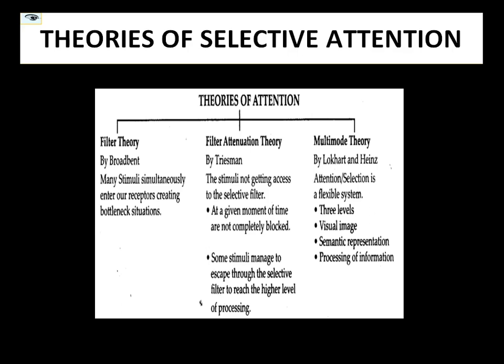The next very interesting model is the multi-mode theory, developed by Johnston and Heinz in the year 1978. This is a very interesting theory which says that attention is a very flexible system, and that it does allow the selection of stimuli over others at three stages. When we talk about stage one, it's all about sensory representations — visual images of stimuli are constructed in stage one.